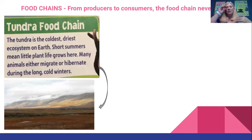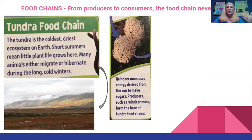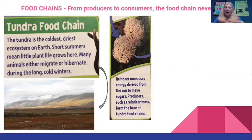In the tundra, here's just an example of a food chain. The tundra is the coldest, driest ecosystem. It has short summers, not a lot of plant growth, and many animals either migrate or hibernate during the cold winters. The reindeer moss uses energy derived from the sun to make sugar — that is a producer and it forms the base of the food chain in the tundra.